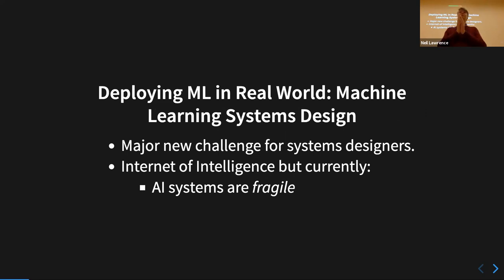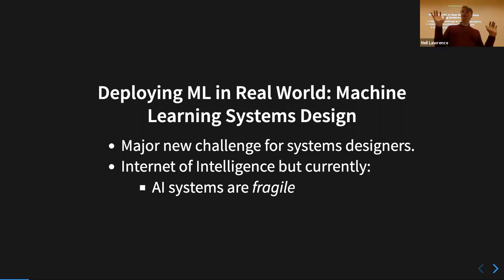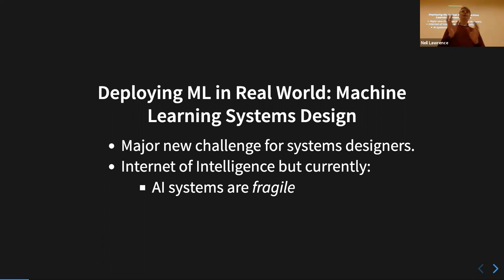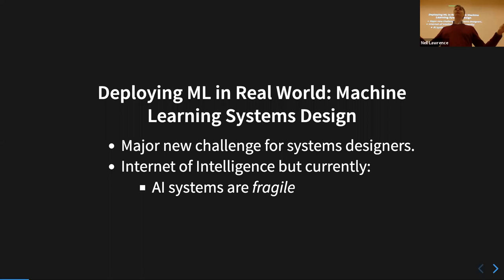Another problem is that the systems we're deploying are extremely fragile. What happens when you deploy them in practice is that they encounter unforeseen consequences that weren't considered by the data scientists when they built the system, and then they break — badly. This is the interaction between machine learning and large-scale computer systems, service-oriented architectures. The data-driven decision making is becoming a linchpin in this whole edifice, and it's being done really badly. That's quite worrying.